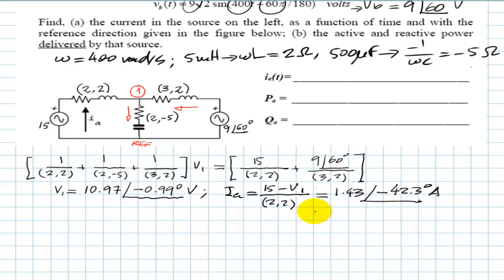But the exercise asks us to find that current as a function of time. This is the RMS value. We need the peak value: 1.43 multiplied by √2. The frequency is the same as the sources, 400 radians per second, and the phase is negative 42.3π/180. These are amps.